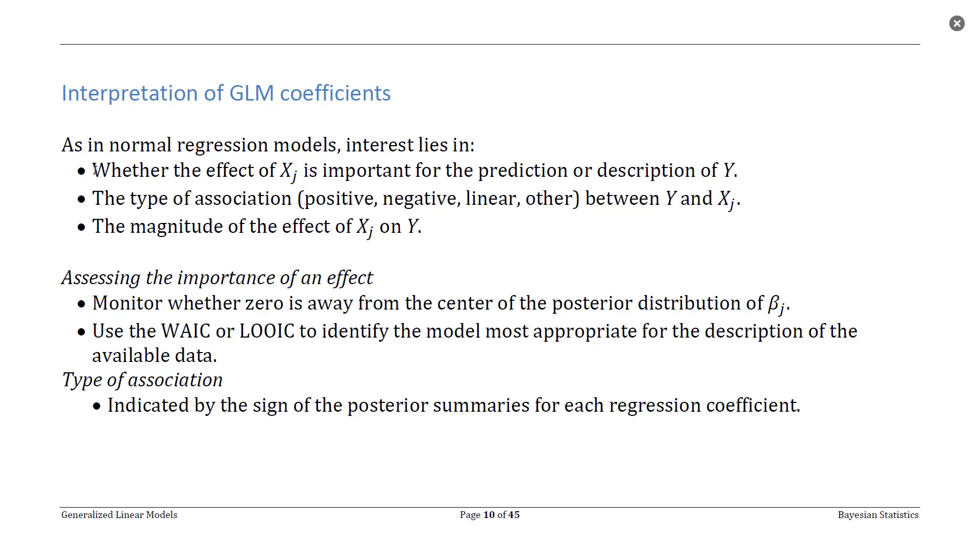But I would say that probably these top two questions are the things you need to prioritize. So is a predictor variable, is an explanatory variable xj important for modeling our response variable? And if it is important, how are they associated? Is it a positive relationship, a negative relationship, or something else?